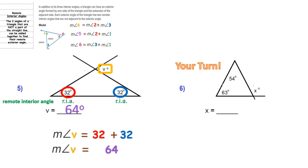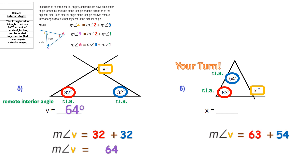Try question 6 on your own, then check your work. The exterior angle we're solving for is X. The two remote interior angles — on the opposite side of the triangle, not connected to the exterior angle — are 54 and 63. Simply add them together: 63 plus 54 is 117. So angle X equals 117 degrees. If you didn't understand, rewind and rewatch, and if still confused raise your hand.